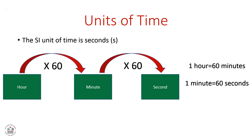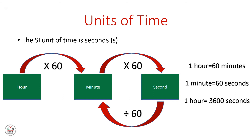To convert from hours to seconds, we multiply by 3600, so 1 hour equals 3600 seconds. If we want to do the reverse and convert from seconds into minutes, we divide by 60. And from minutes into hours, we also divide by 60.